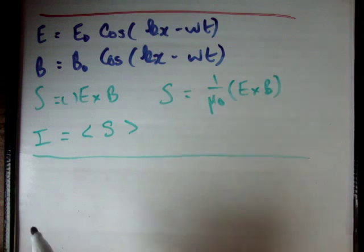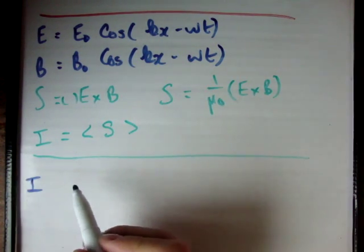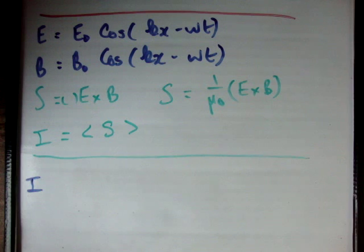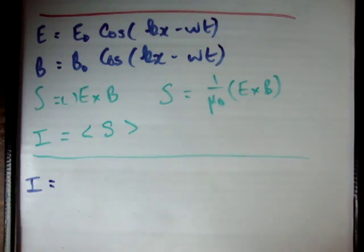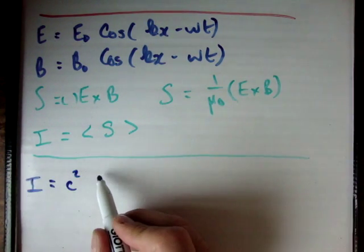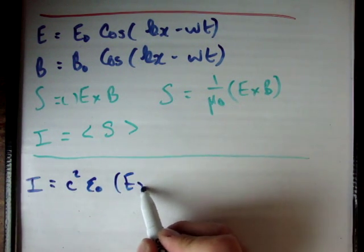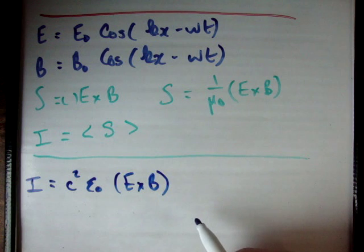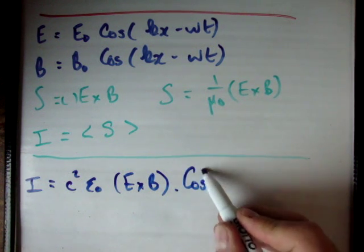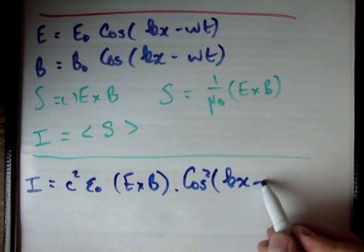So the average of the Poynting vector is going to be equal to the irradiance, and that's going to be equal to E cross B. So it's going to be equal to C squared epsilon zero times E cross B, and we need to multiply that by cos squared kx minus omega t.